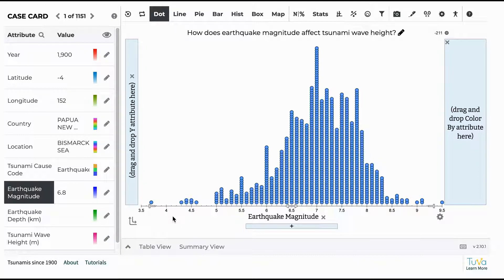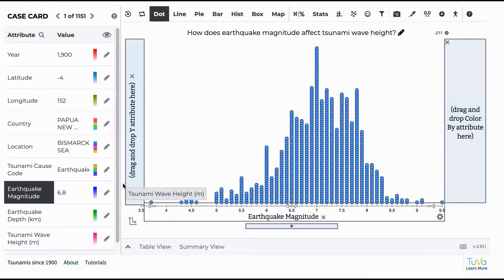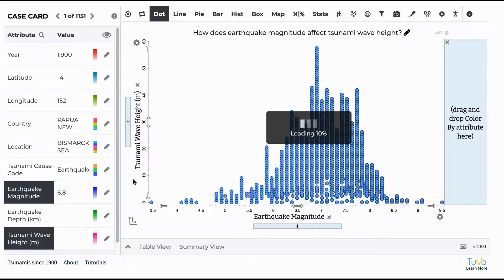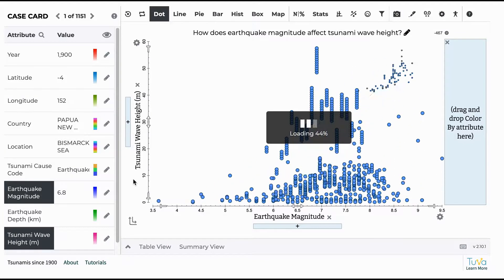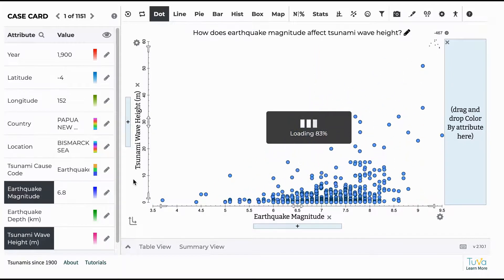But now you want to look at how that affects wave height. So you'll click the tsunami wave height and put it on the y-axis. And now it actually shows you a pattern around how the magnitude of the earthquake affects the wave height.